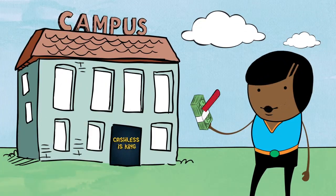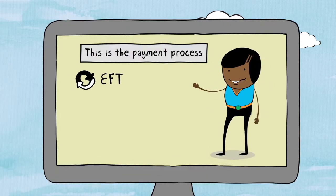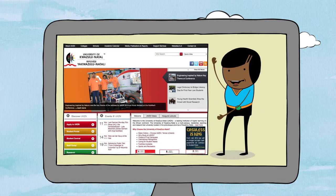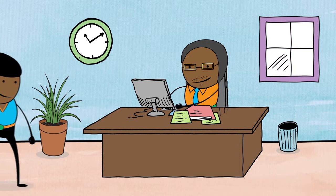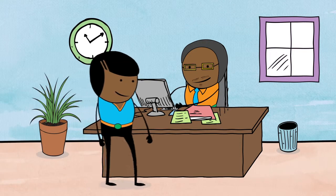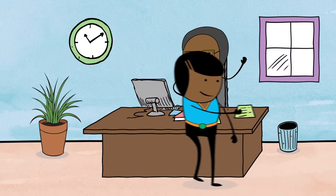Please note that UKZN no longer accepts cash payments for fees on campus. You will need to do this via EFT, direct deposit, or by following the click-to-pay links on Student Central. See the UKZN website for details. To get academic clearance, see the academic leader in your school for academic counselling and curriculum approval.